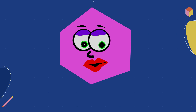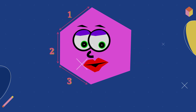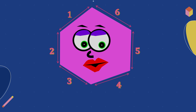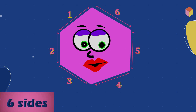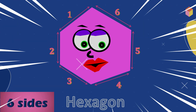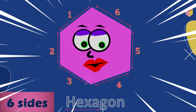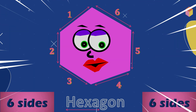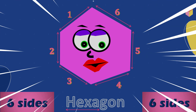Let's count the number of sides. One, two, three, four, five, six. Six sides is Hexagon. Hexa means six. Hexagon.